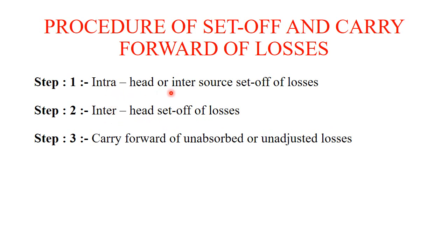If step one — intra-head adjustment — is not possible because there is no income in the same head, or if you could not fully adjust even after inter-head adjustment, then the balance remaining is the carry forward of unabsorbed or unadjusted losses. These losses are carried forward to the subsequent assessment year — meaning the next year. These are the three steps in set-off and carry forward of losses: first, intra-head or inter-source adjustment; second, inter-head adjustment; third, carry forward of unabsorbed losses.